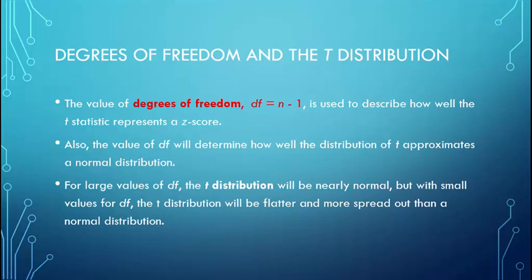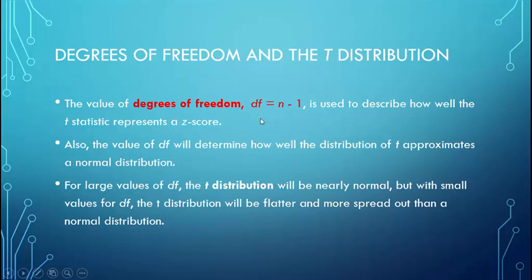Degrees of freedom is used to describe how well the T statistic represents a Z-score, or how well the distribution approximates a normal distribution. Degrees of freedom is almost the same as sample size — it's just sample size minus one. If you have a very small sample like three people, degrees of freedom is two, giving a very short and wide curve suggesting lots of variability. But if you have a sample size of a thousand, degrees of freedom is 999, and that would be nearly a normal distribution, suggesting you're getting a very good estimate of the population.